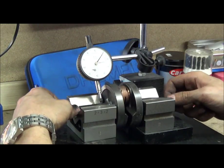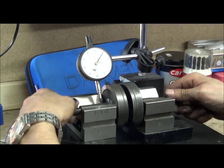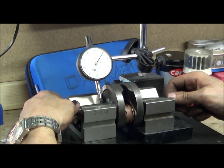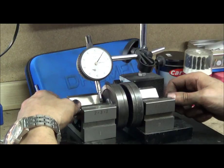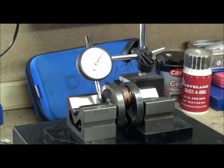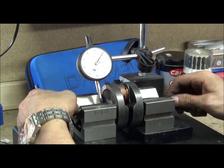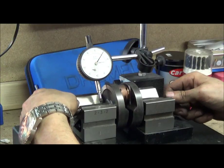So if you get a constant reading like that, you can see how much runout there is. Now you've got to make sure the crank's very clean and the V-blocks are very clean. You can see how much runout there is. And you can see there's a tiny amount of runout.